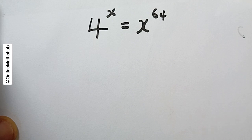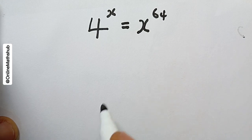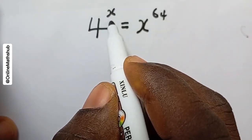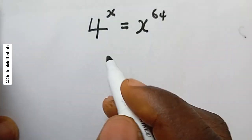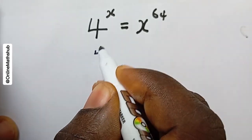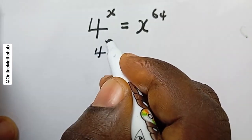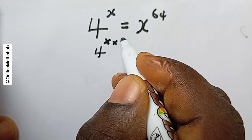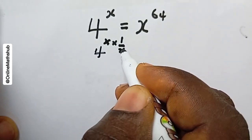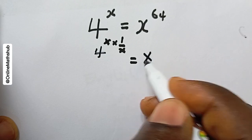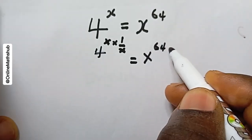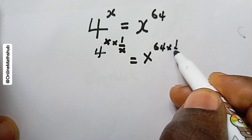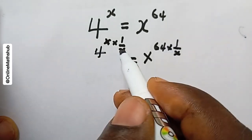What we want to do is find a way to group the terms together, bringing those containing letters to one side of the equation so we're able to simplify. The first thing I want to do is eliminate the x in the exponent, and I can do that by multiplying both sides by the power one over x.